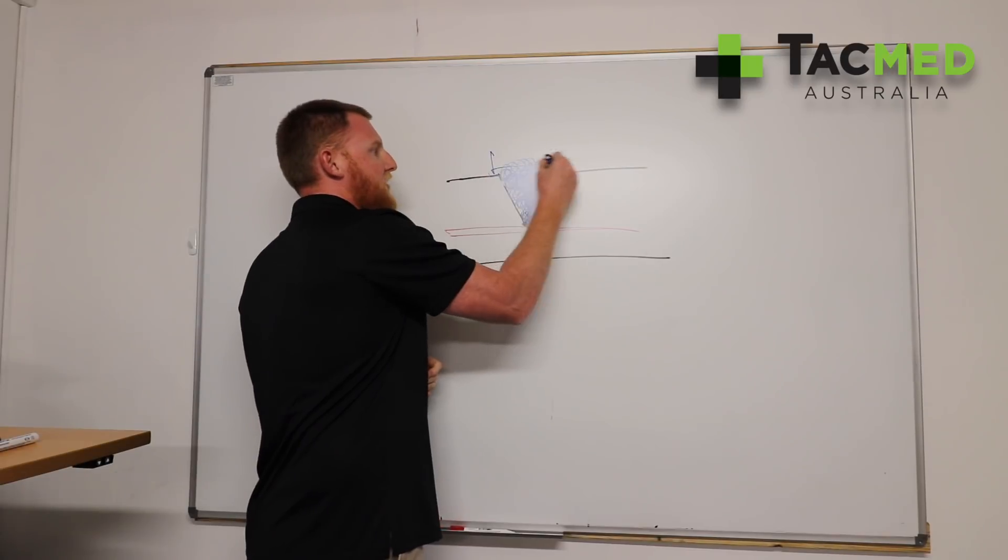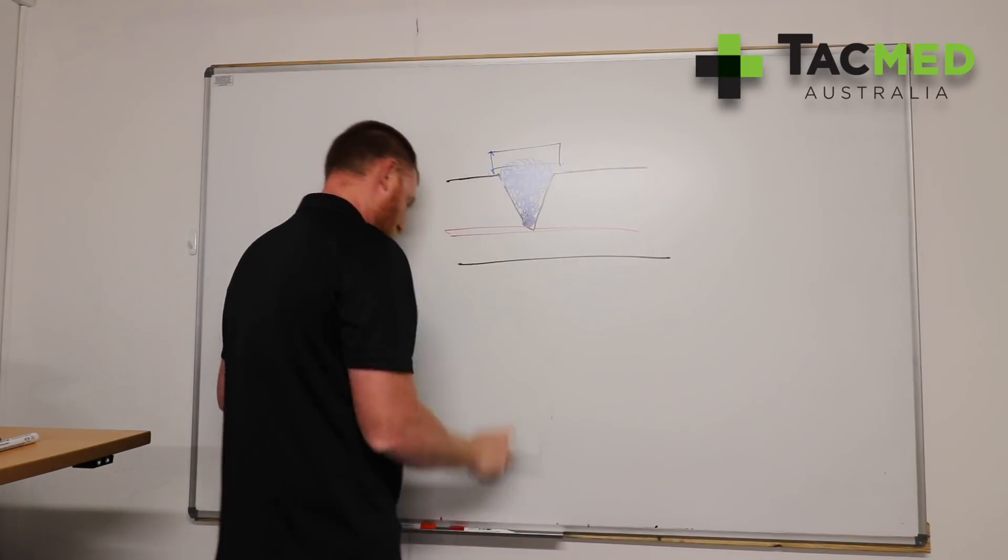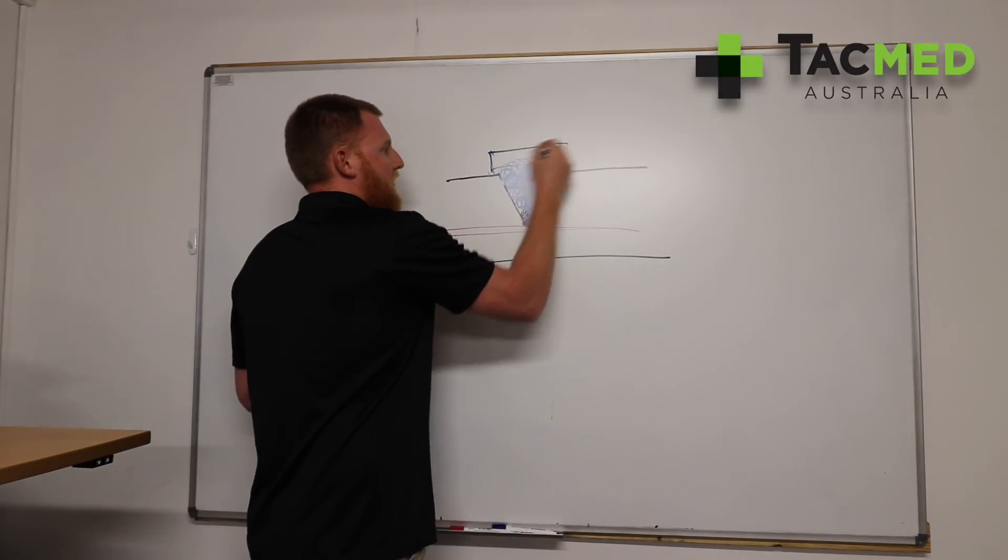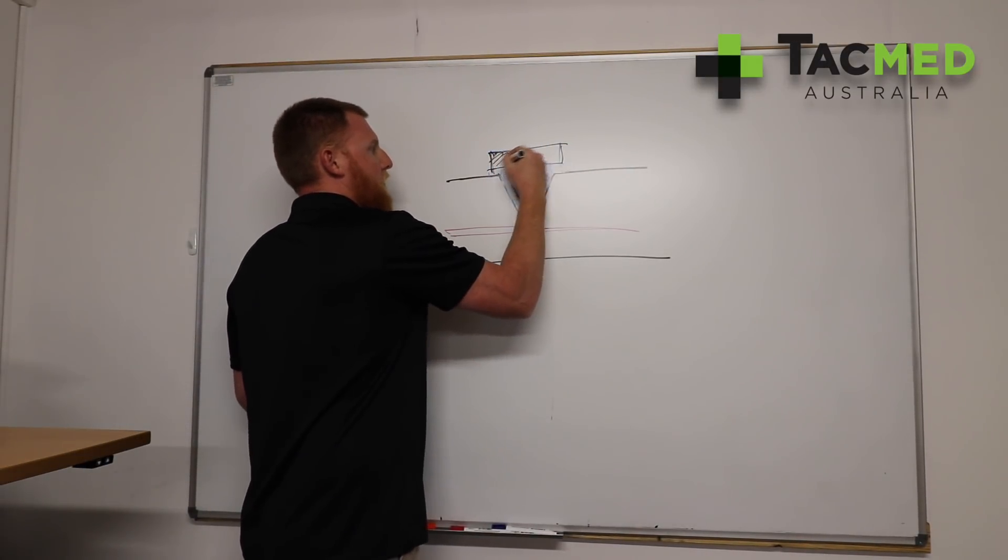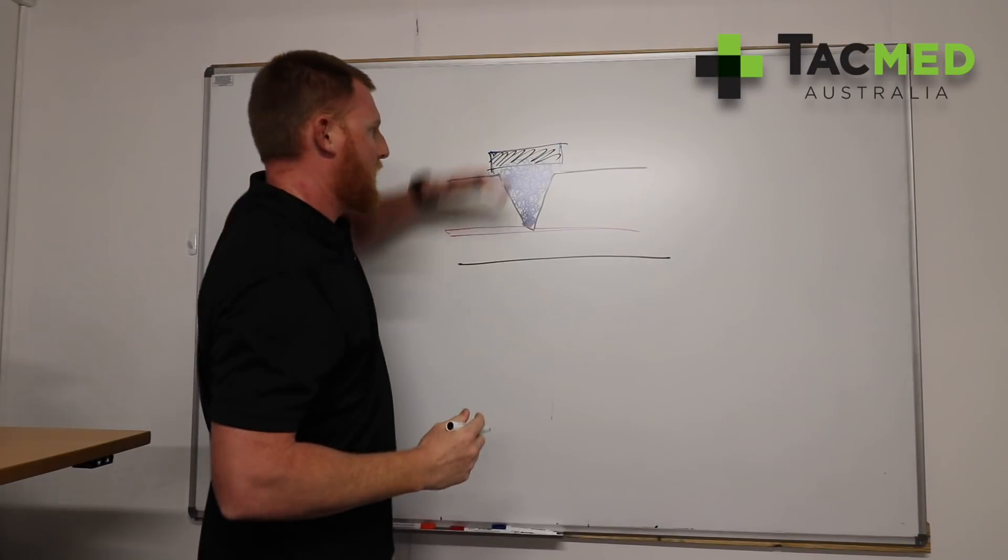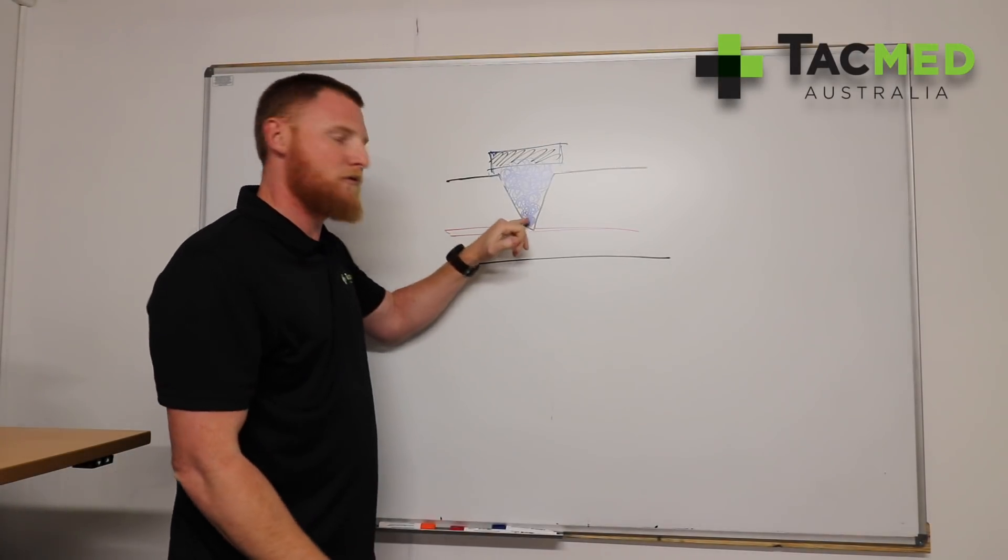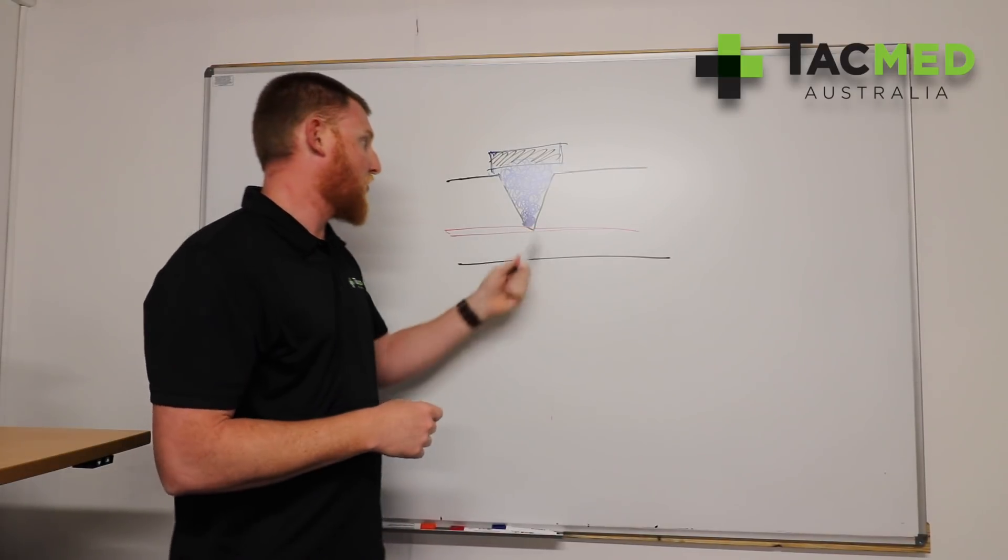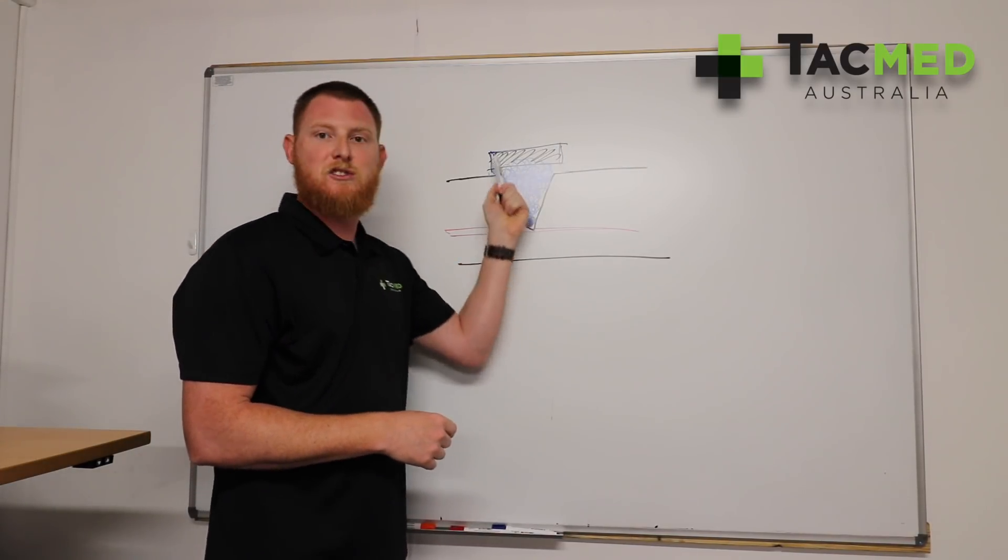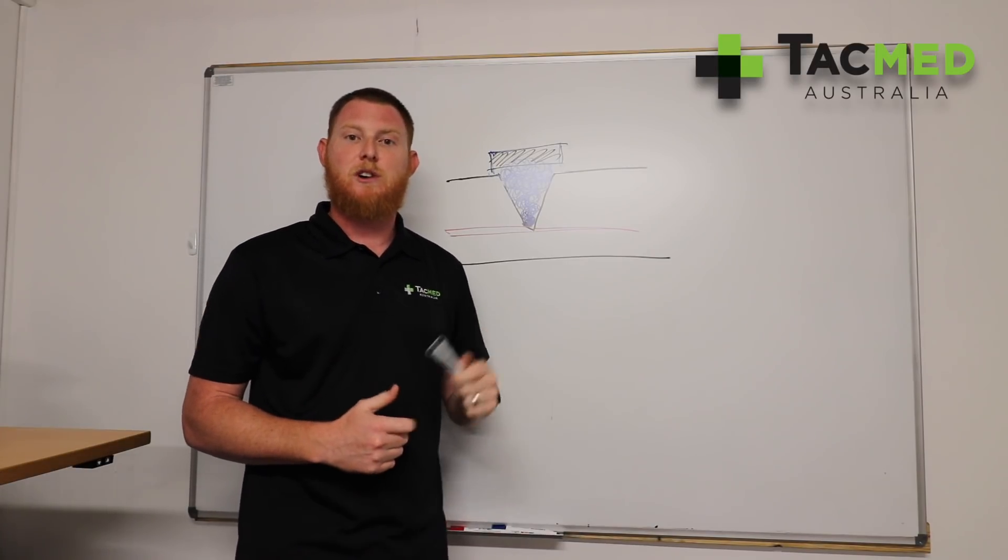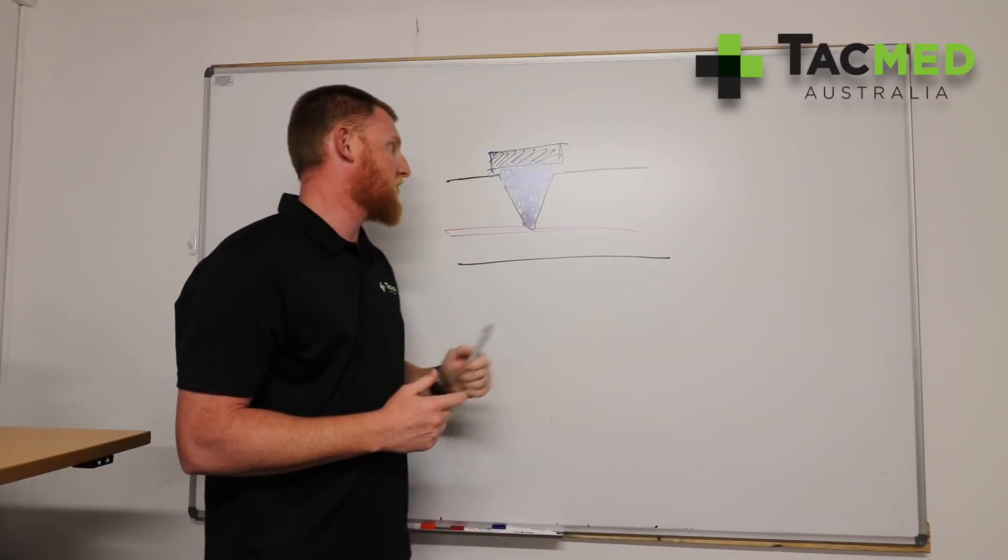From there, we can place our trauma dressing over top, place that pressure down and wrap it. So that's going to be applying direct pressure down into the bleeding vessel that's causing all the problems, not just putting a dressing on or a towel that's simply going to absorb blood. Remember, hemorrhage control is about pressure and not absorption.